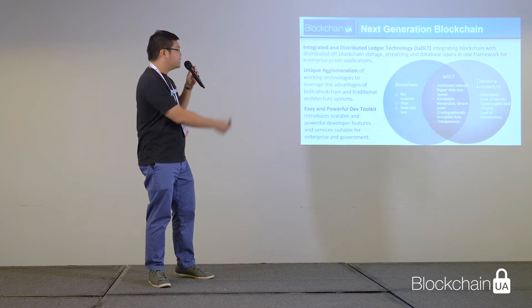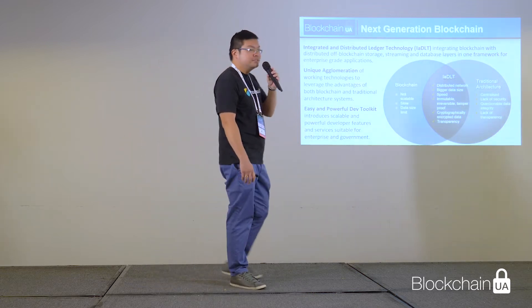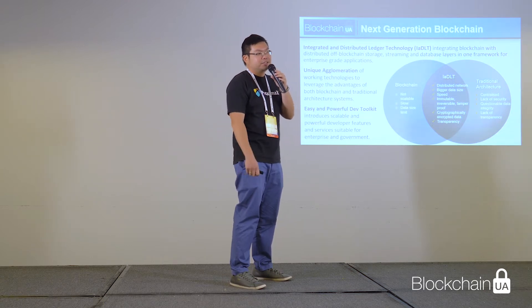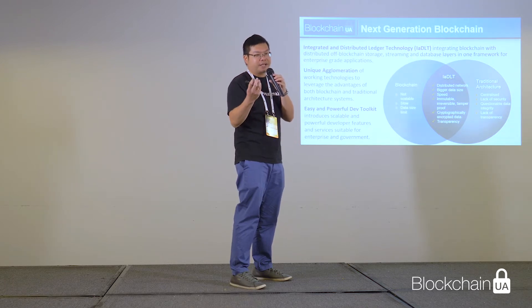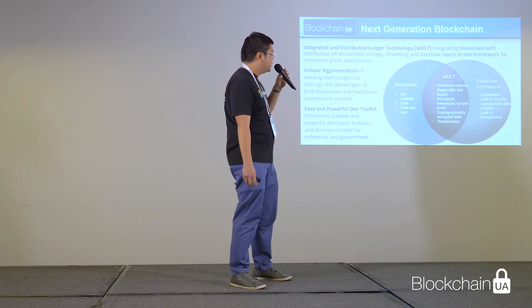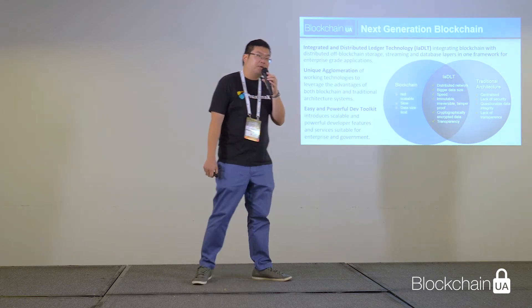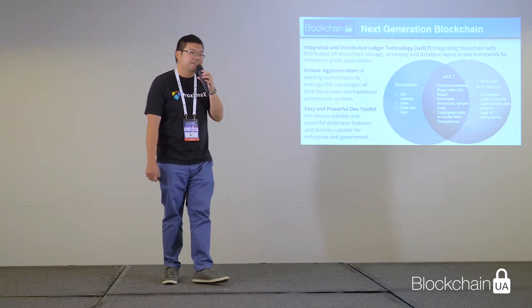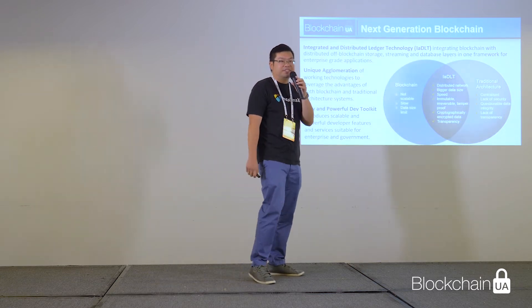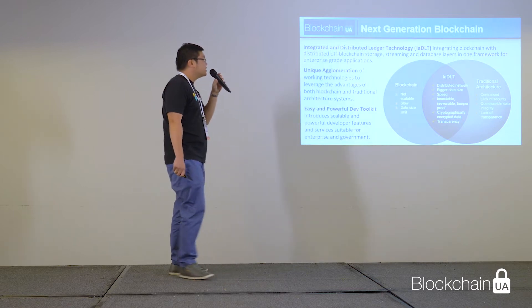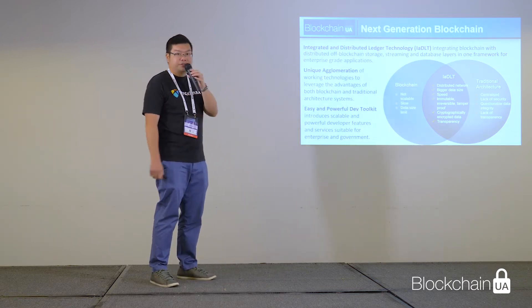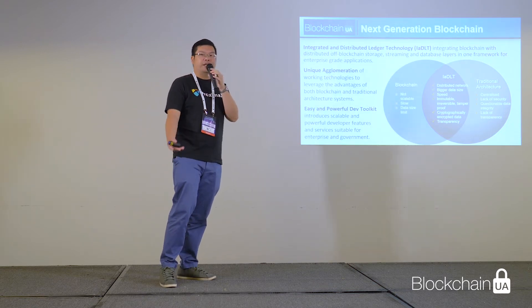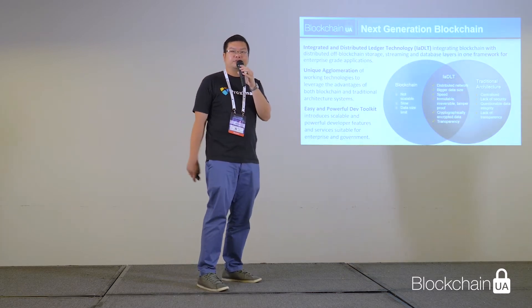In the traditional architecture, it is centralized and lacks security because there is a single point of attack from the outside. When you have a centralized architecture, hackers can launch a targeted attack. And the companies hosting the server — be it AWS or Google — are actually monitoring all your data. There is also a lack of transparency. So today, we need an integrated and distributed ledger technology where we combine the best of both worlds and offer it as a platform and solution to the industry at large.